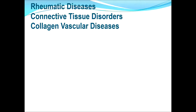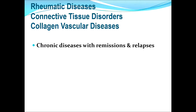Words used interchangeably include rheumatic diseases, connective tissue disorders, and collagen vascular disorders. These are all chronic diseases with many remissions and relapses over a long course of illness. These disorders are all multi-systemic, which means that apart from involvement of joints and bones, they affect all other tissues of the body — like blood vessels, CNS, muscles, and metabolic systems. Do not consider them as only confined to bones and joints.